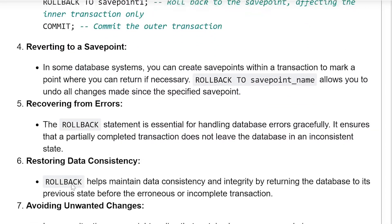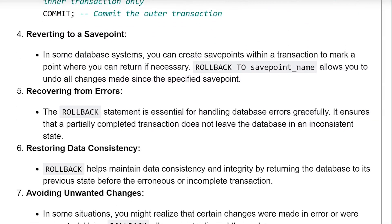Reverting to a Save Point: In some database systems you can create save points within a transaction to mark a point where you can return if necessary. Rollback to a save point name allows you to undo all the changes made since the specified save point.